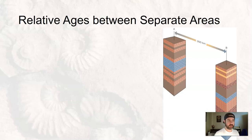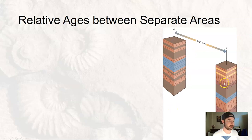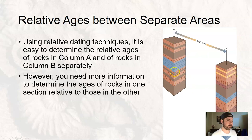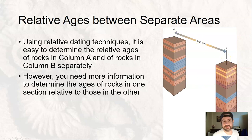We can look at two different columns of rocks and individually come up with relative dating — oldest at the bottom, youngest at the top, same thing over here. But how do we connect the two? How can we say this is related to this somehow if they're separated by great distances?